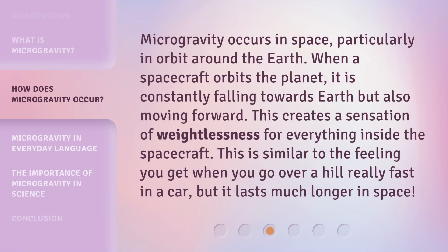Microgravity occurs in space, particularly in orbit around the Earth. When a spacecraft orbits the planet, it is constantly falling towards Earth but also moving forward. This creates a sensation of weightlessness for everything inside the spacecraft. This is similar to the feeling you get when you go over a hill really fast in a car, but it lasts much longer in space.